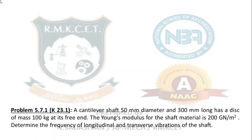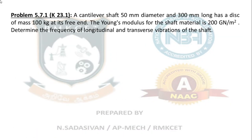I am going to do the first problem in your vibration topic, problem 5.7.1 taken from Kourmet 23.1. The cantilever shaft is 50 mm in diameter and 300 mm long and has a disc of mass 100 kg at its free end. Understand the question very carefully.